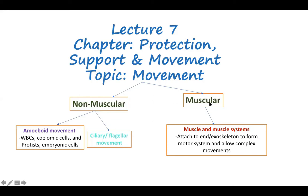The second major type is called muscular movement, which occurs through muscles and the muscular system. Muscles are a type of tissue attached to the endoskeleton or exoskeleton to form a complex system called the motor system, enabling complex movements in invertebrates and vertebrates.